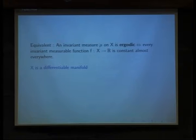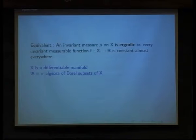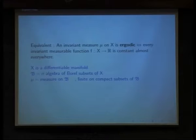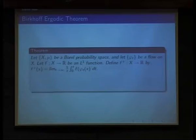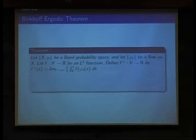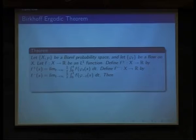I'm about to state the Birkhoff ergodic theorem, which is a central tool in all of ergodic theory. We'll assume the measurable sets are the Borel sets, and the measure is finite on compact subsets. We have a Borel probability space, a flow, and an L¹ function. We define the forward time average f⁺ at a point x by letting the point flow with time t, evaluating the function, averaging over the interval from zero to t, and taking the limit. The backward time average is defined similarly. The Birkhoff ergodic theorem states that these two functions exist and are equal almost everywhere.